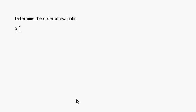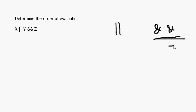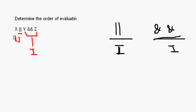Now I will take up one more question. Determine the order of evaluation again, this time for some logical operators. Let's say x OR y AND z. Here there are only two operators: OR and AND. AND has the higher priority, so the expression y AND z is the first one to be executed, and after that x OR the result of that. That is the order.